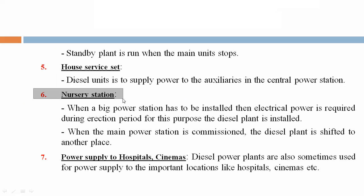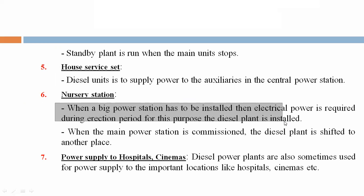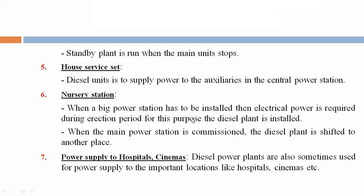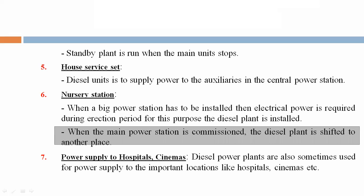Sixth, nursery station. When a big power station has to be installed, electrical power is required during the erection period. For this purpose, the diesel plant is installed. When the main power station is commissioned, the diesel plant is shifted to another place.